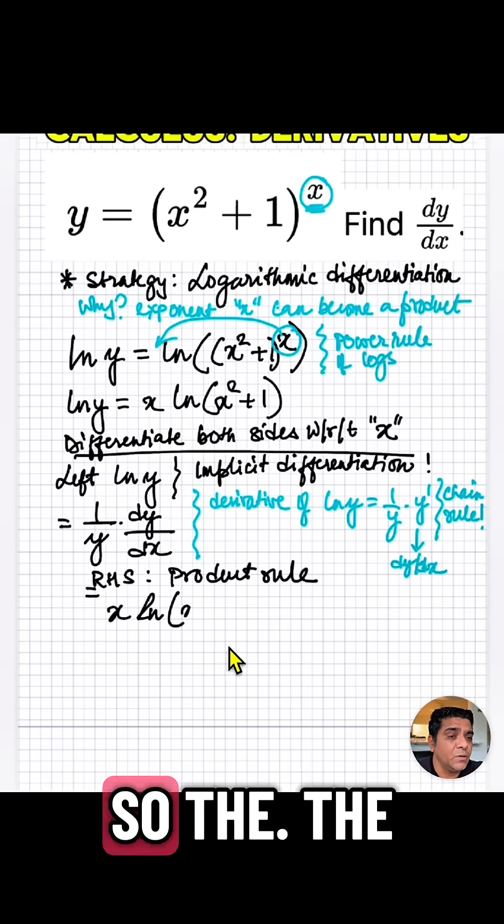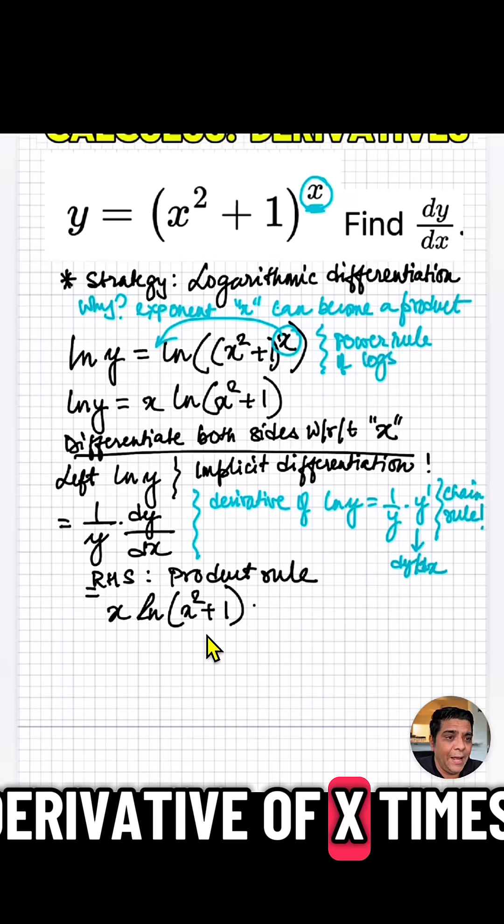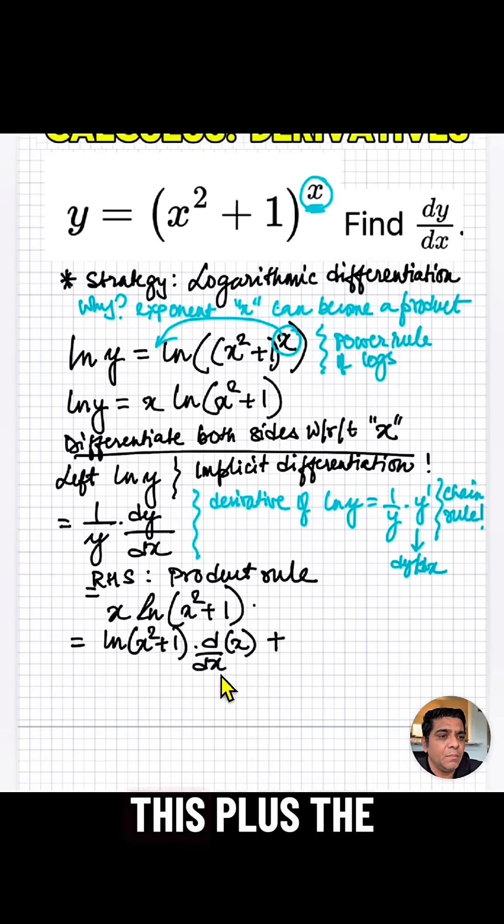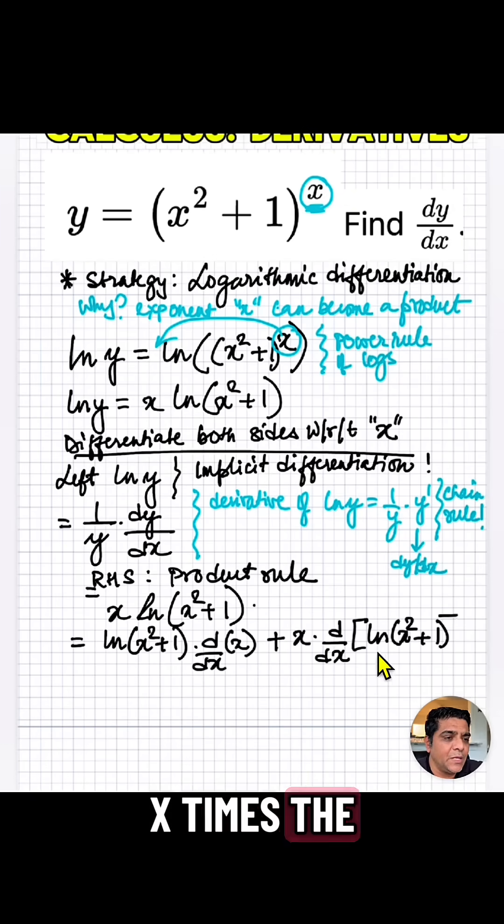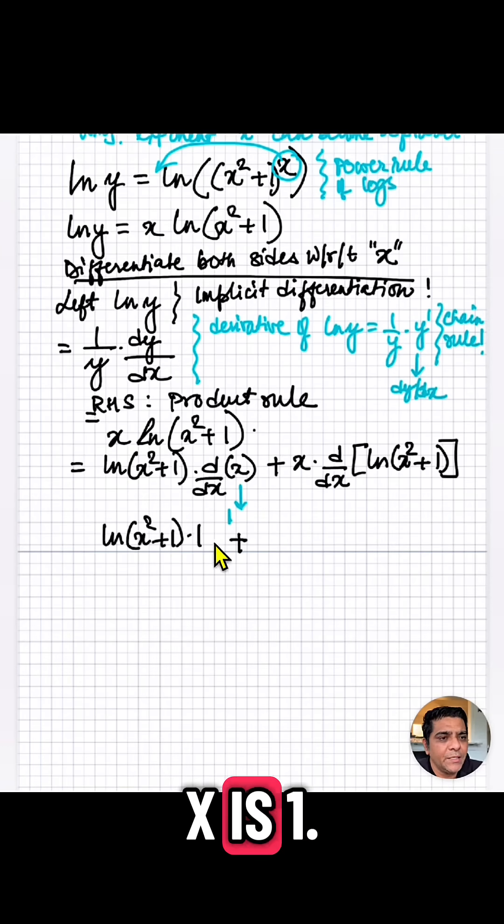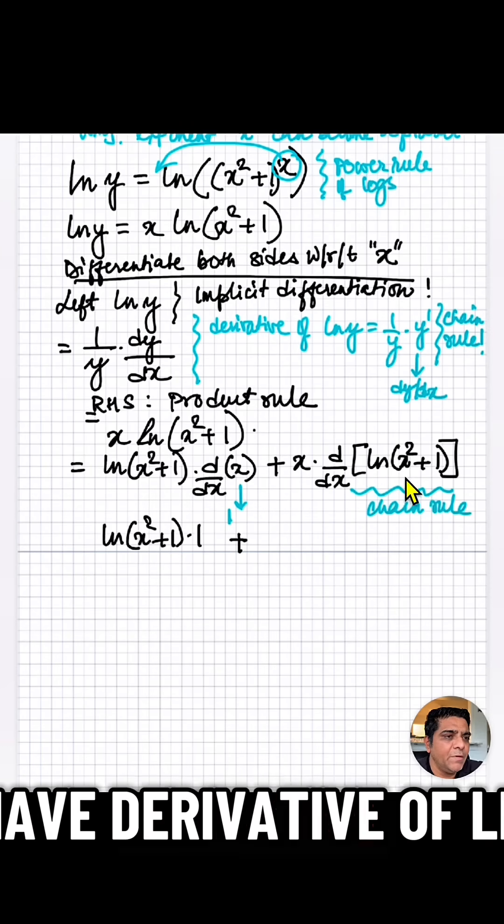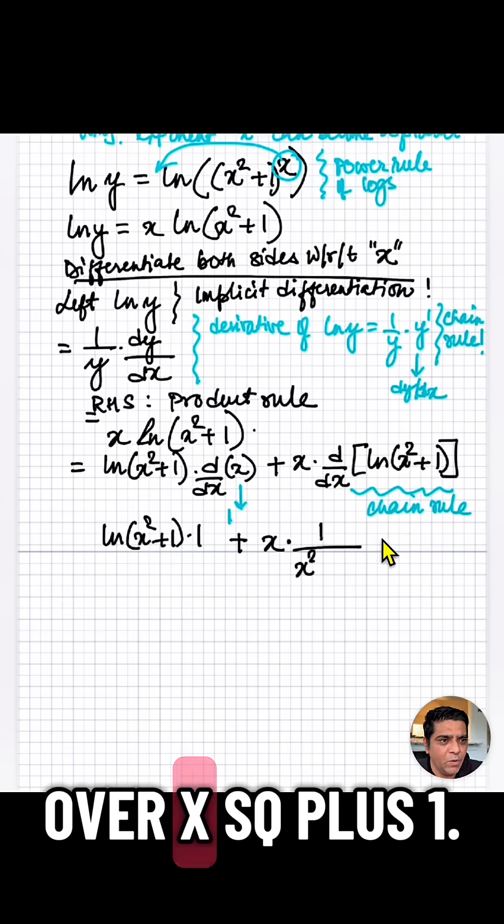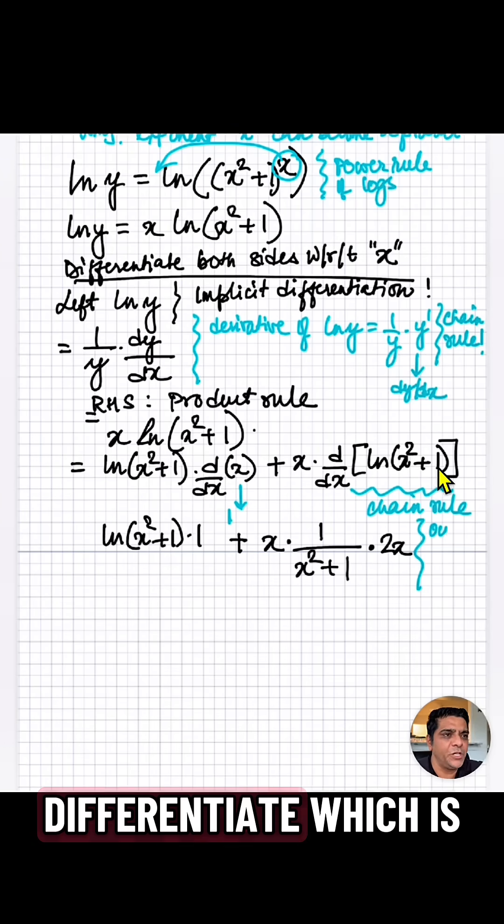Right hand side, we're just going to use a product rule. So the derivative of x times this plus the x times the derivative of the other part. So derivative of x is 1. And here we have derivative of ln x squared plus 1 is 1 over x squared plus 1. And then the inner function we have to differentiate, which is 2x.